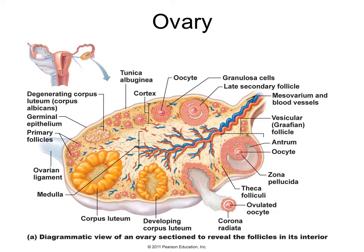Notice the corpus luteum shown in yellow. After ovulation, the corpus luteum will be releasing hormones to help prepare the uterus should fertilization occur.